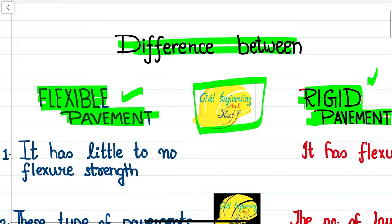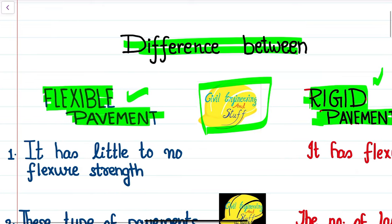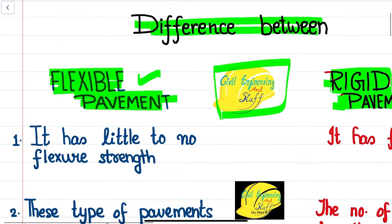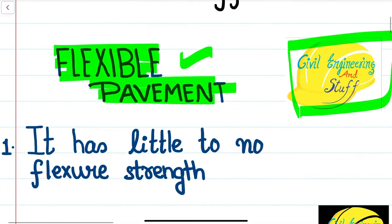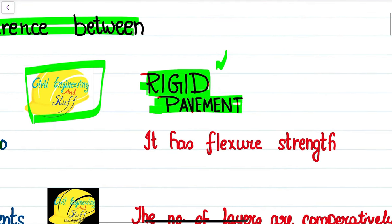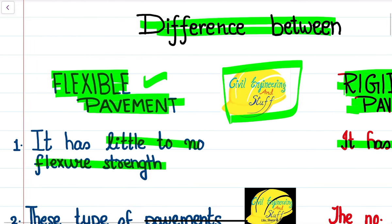The first difference between flexible pavement and rigid pavement is that a flexible pavement has little to no flexure strength, while rigid pavement has a significant amount of flexure strength. This is one of the basic differences — there is no flexure strength in flexible pavements, whereas rigid pavement has a significant amount of flexure strength.